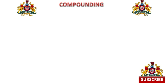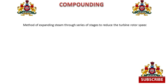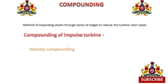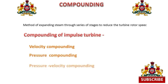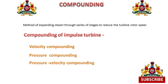Today we will discuss about compounding of impulse turbines. The method of expanding steam through a series of stages to reduce the turbine rotor speed is called compounding. In the case of impulse turbines, compounding is of three types: velocity compounding, pressure compounding, and pressure-velocity compounding.